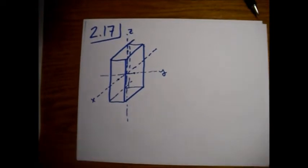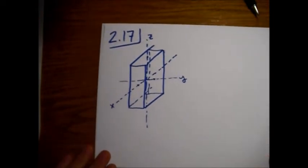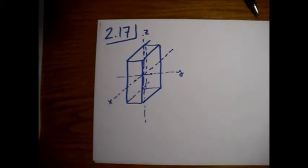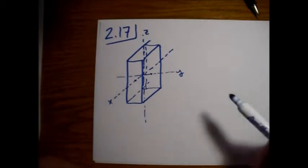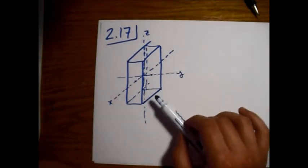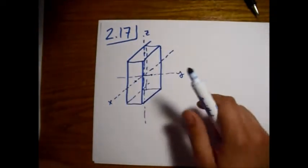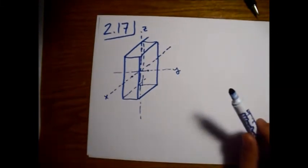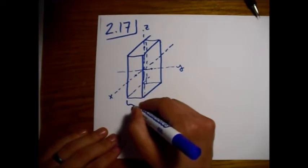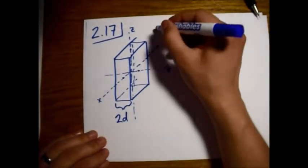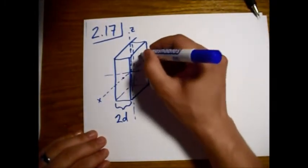So, Griffiths Electrodynamics, problem 2.17. What we're doing is finding the electric field from an infinite slab of uniform charge. The way Griffiths sets it up, if you look at the figure, he puts the y, x, and z axes like this, and the slab is oriented in sort of the x-z plane. It has a thickness of 2d and a charge density of rho.